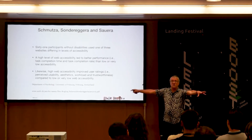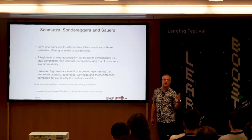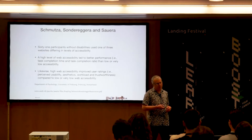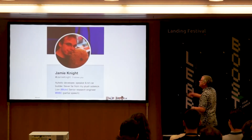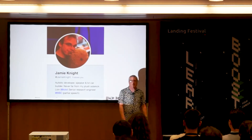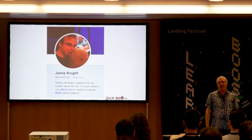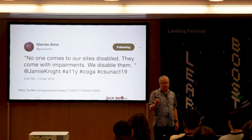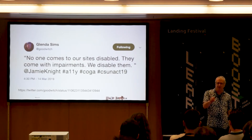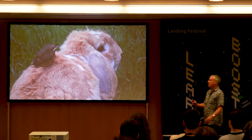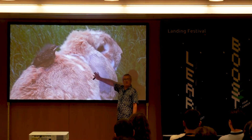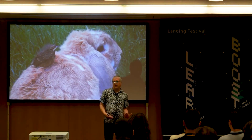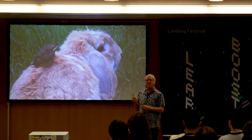I'll tweet a link to the slides with all the information. My friend Jamie Knight is a senior research engineer at the BBC — he's autistic and quite often loses the power of speech. But he said something profound: 'No one comes to our sites disabled. They come with impairments. We disable them.' Just remember where the fluffy bunny rabbit of good HTML goes, the tweety bird of accessibility just follows along.